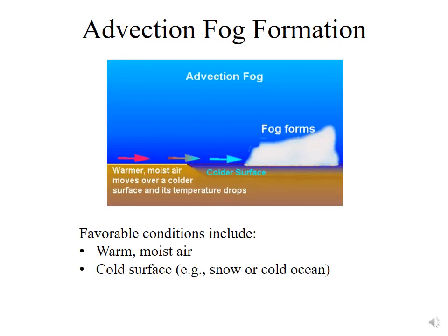Finally, we can have advection fog, where warm, moist air is brought over a colder surface. That cold surface cools the air at constant pressure until the dew point is reached, at which point fog forms. The two most common scenarios are warm, moist air moving over a cold ocean current, or warm, moist air moving over a snow-covered surface — either has the same impact. We call this advection fog because temperature and moisture advection are occurring in order for it to form.